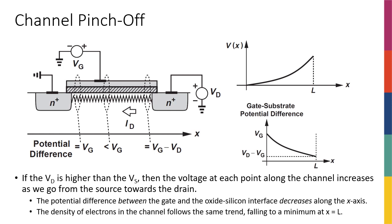We saw what happens when I start to increase VG from zero to somewhere above the threshold voltage: my transistor goes from the off region of operation to the on region of operation. If I increase VG, I'm going to turn on the transistor.